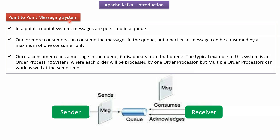Now we will see the point-to-point messaging system. Here you can see the queue, the sender — also called publisher — and the receiver — also called consumer. The publisher publishes a message to the queue. The receiver or consumer consumes the message from the queue, and once the message is consumed, the receiver acknowledges back to the queue.